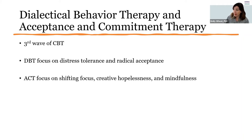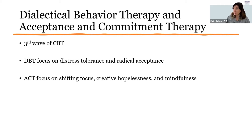An aspect of DBT is called radical acceptance — the complete and total acceptance from deep within of the facts of reality. This involves acknowledging that facts are true and letting go of a fight with reality. Acceptance does not mean approval and doesn't mean a person is against changing. For instance, I can accept my pain but maybe I don't approve of it, or I can accept my pain but may still also wish to change it.